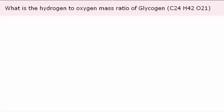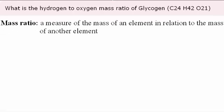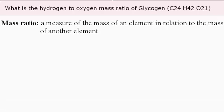The mass ratio simply means a measure of the mass of an element in relation to the mass of another element. So for example, you could be comparing carbon to hydrogen in this case, or hydrogen to oxygen, and so on and so forth.